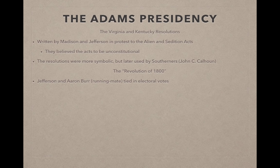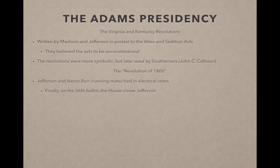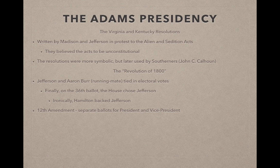In the election of 1800, voters were supposed to elect Aaron Burr as Jefferson's Vice President. Due to a quirk, the two tied in electoral votes, sending the decision to the House of Representatives. On the 36th ballot, the House chose Jefferson over Burr. Ironically, Hamilton — who hated Jefferson — hated Burr even more, and encouraged the House to support Jefferson. The 12th Amendment was then added, requiring separate ballots for president and vice president to prevent future ties.